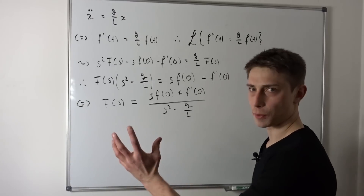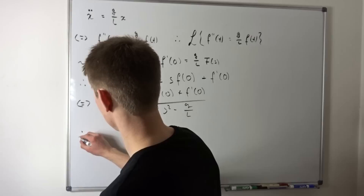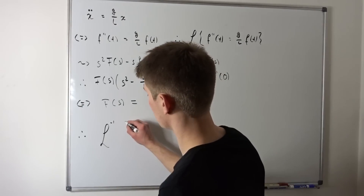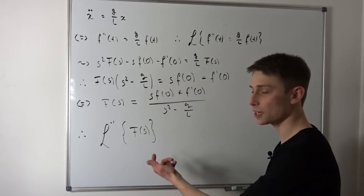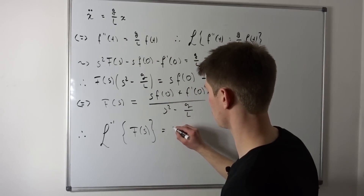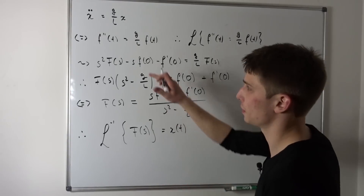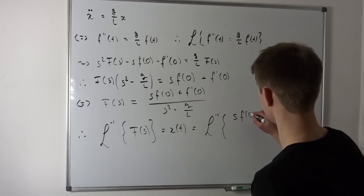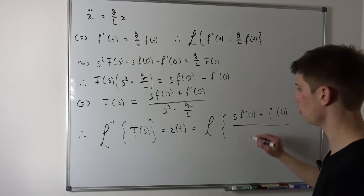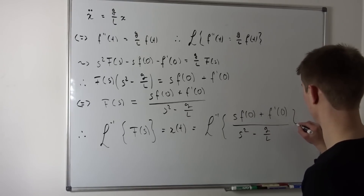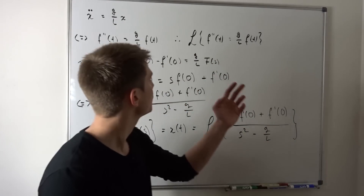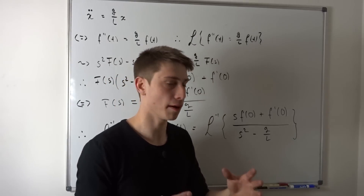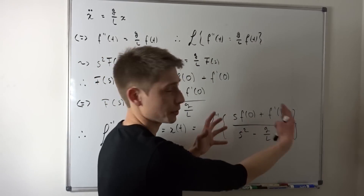Now we want to apply the inverse Laplace transform to both sides. The inverse Laplace transform, denoted L⁻¹ of F(s), is the solution to our differential equation — so that's f(t), some time-dependent function. Just like the regular Laplace transform, the inverse Laplace transform is defined like a Fourier transform, so it's a kind of sum and we can use linearity. That means we can break this up into two inverse Laplace transforms.